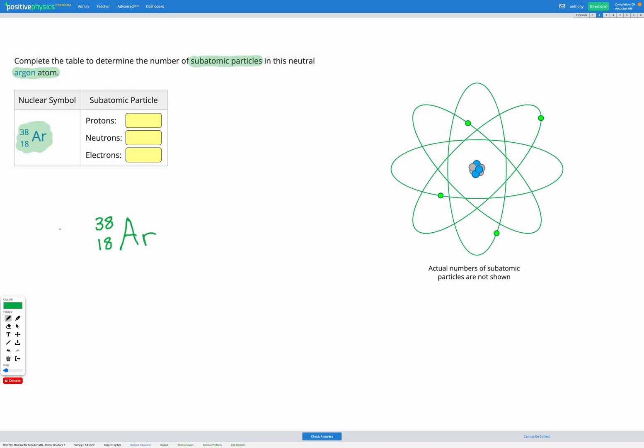So this number on the bottom here, that is the atomic number, and that tells us how many protons we have. So since we have the number 18 on the bottom there, we know we must have 18 protons in this atom. So let's fill that in first. 18 protons.